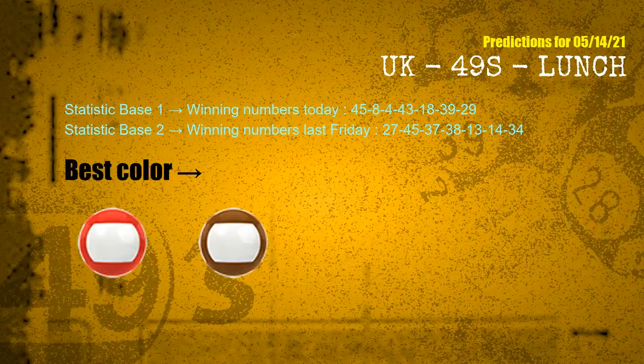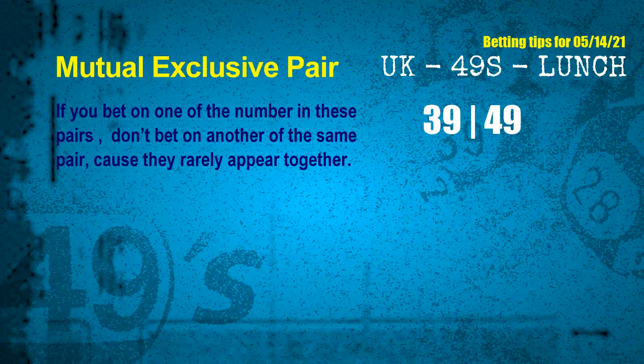According to the statistics above, with winning numbers today 45, 08, 04, 43, 18, 39, 29, and winning numbers last Friday 27, 45, 37, 38, 13, 14, 34 — the frequent following colors are red and brown. Now we have some following ones and ball colors. Here are some tips to increase your hit odds, such as mutual exclusive pairs. These numbers in a pair both match the following ones and colors, but according to thousands of results, they rarely appear together — so if you bet on one, don't bet the other in the same pair.